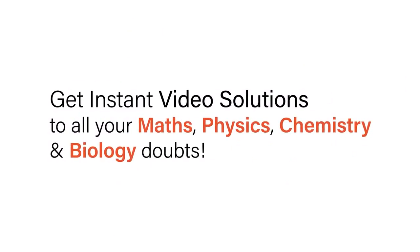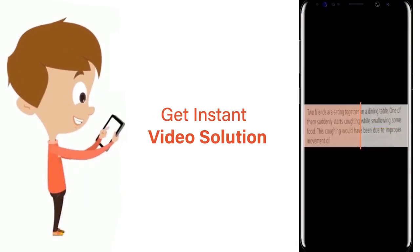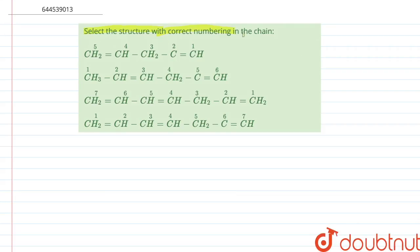With Doubtnet, get instant video solutions to all your maths, physics, chemistry, and biology doubts. Just click the image of the question, crop it, and get instant video solutions. Download Doubtnet app today. Select the structure with correct numbering in the chain.